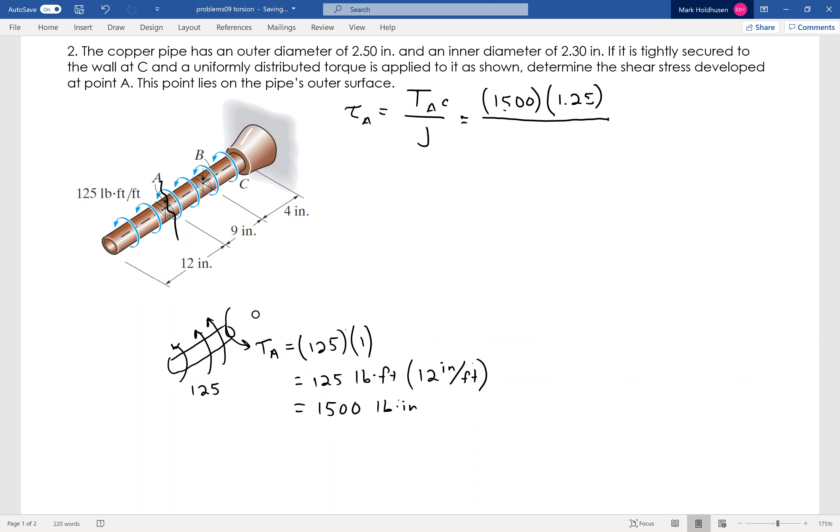And then J is going to be the polar moment of inertia. It's a tube, so it's going to be outer minus inner. So it's going to be 1.25 to the fourth minus 1.15 to the fourth. That's the outer radius and the inner radius that I have shown in there.